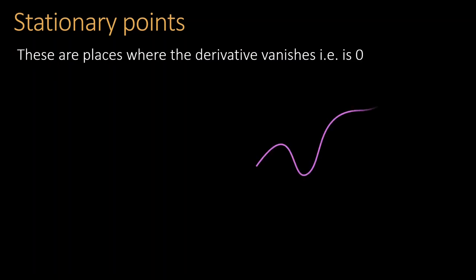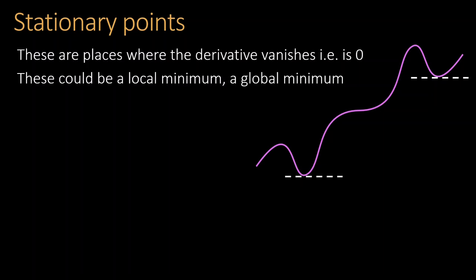Of great interest in calculus are points where the derivatives vanish, and these are lovingly called stationary points. Stationary points could either be a local minimum—that is, a point which achieves the smallest function value but only in a small region surrounding that point—or a global minimum, that is, a point which achieves the lowest function value among all points, or a local maximum or a saddle point.